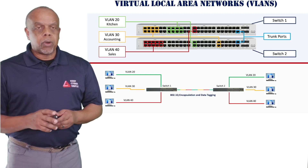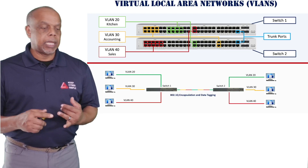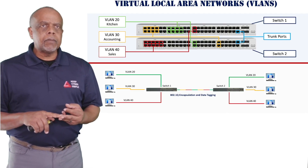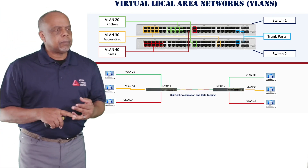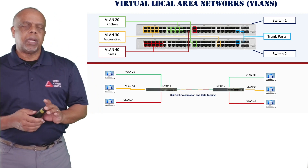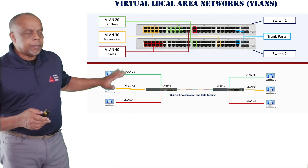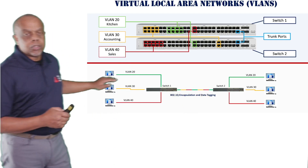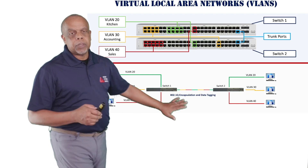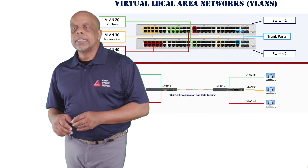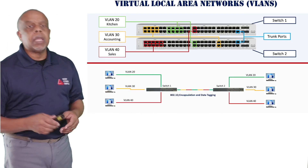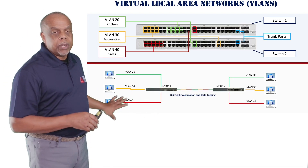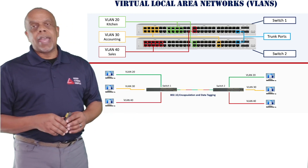For example, you may have your network security appliances — things like Splunk, SolarWinds, Snort, Wireshark, and different security tools — all residing in their own security VLAN. That way your security team can get to those tools, but other people in your organization are unable to access them. You would set those in their own security VLAN so that no one else in the organization has access to those types of tools.